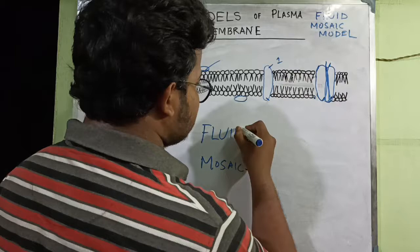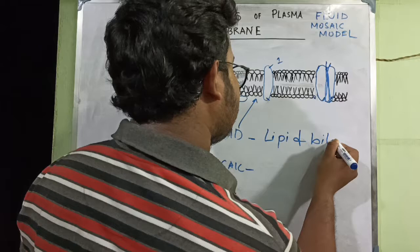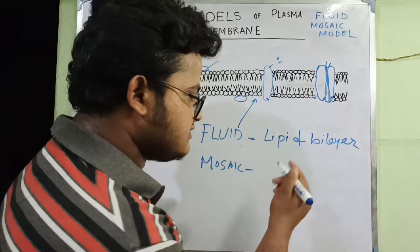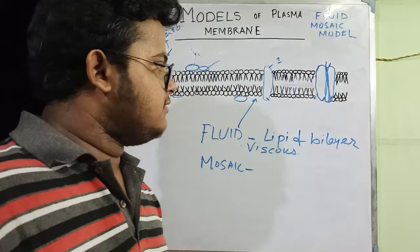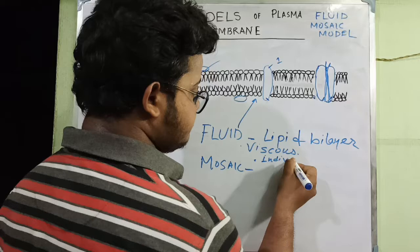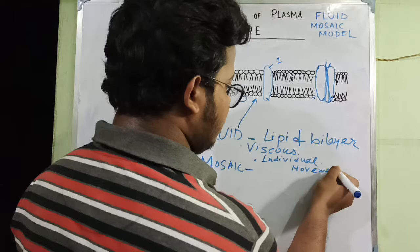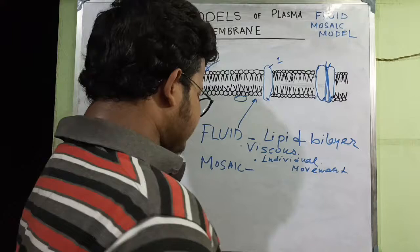Fluid refers to the lipid bilayer. The lipid bilayer is called fluid because it is viscous, and the individual phospholipid units can move their position within the membrane as needed by the cell.